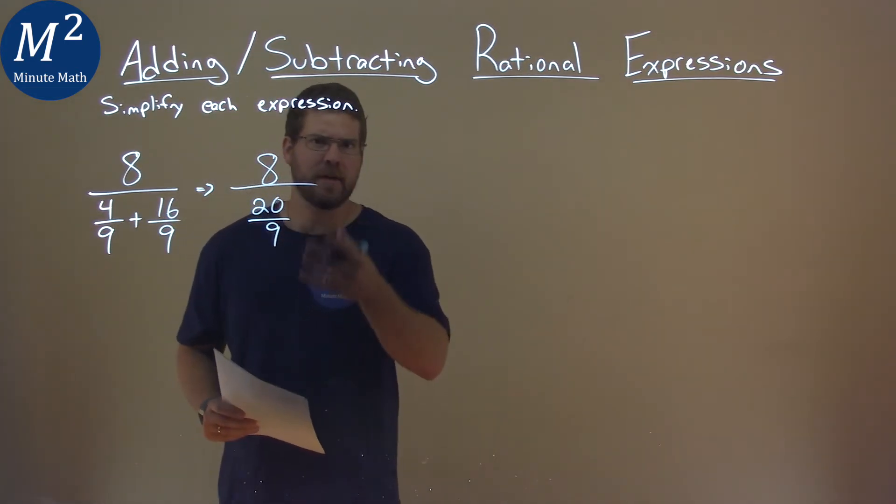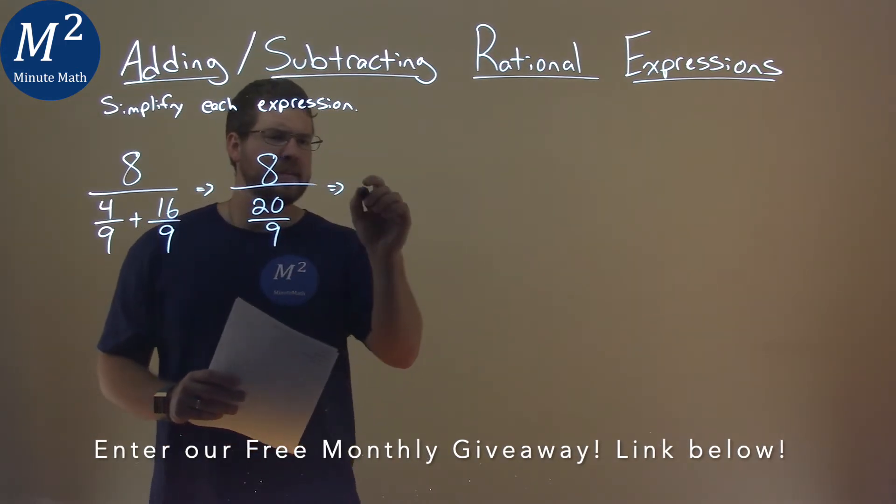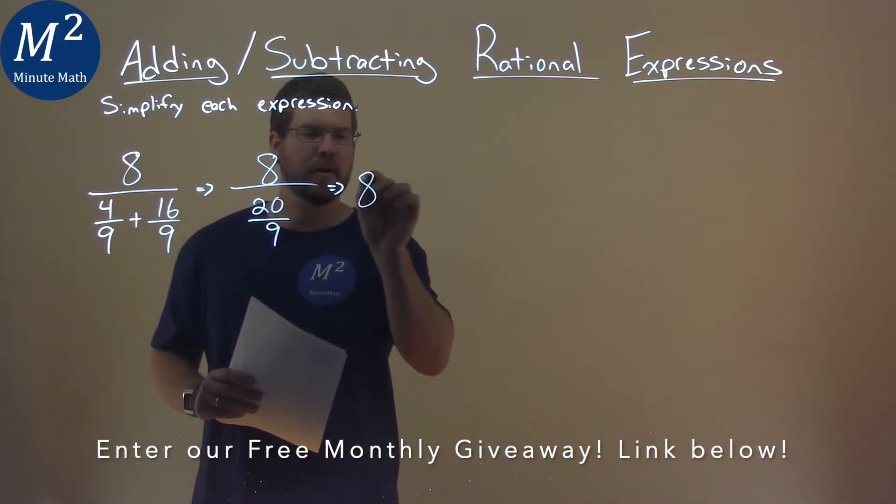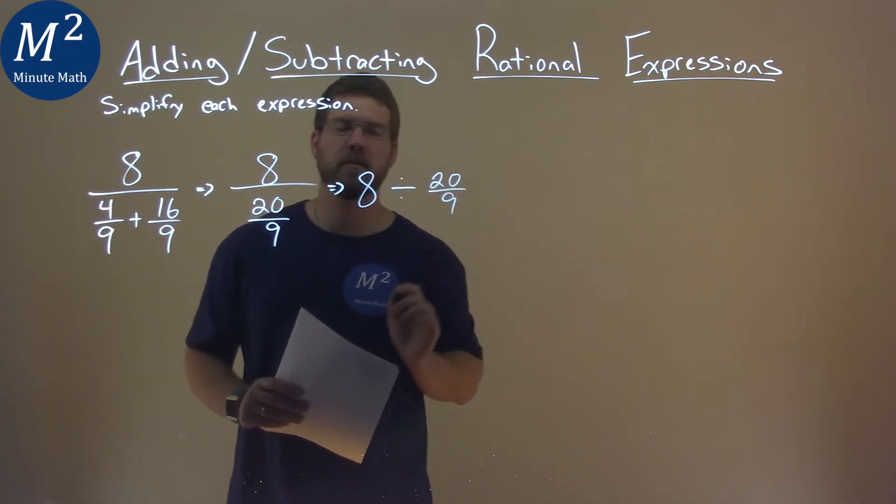Now we have a fraction here and a fraction, so many fractions. What I like to do is I take that 8, and instead of writing it over 20 over 9, I write it like this, divided by 20 over 9. I think it's easier to see.